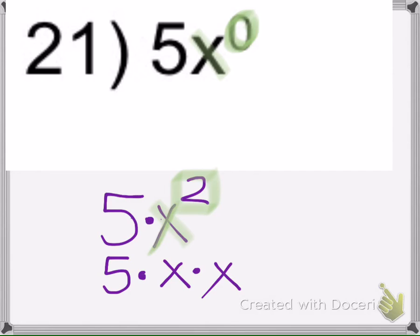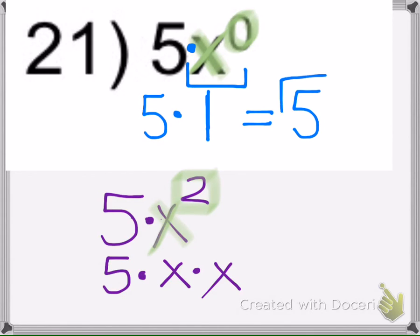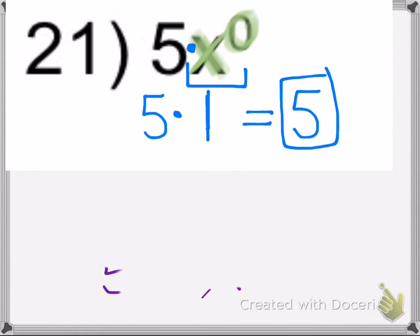this 0 is only going to this x right here. So this is equal to 1. So it's saying 5 times an x to the 0 power is 1. So 5 times 1 is 5.